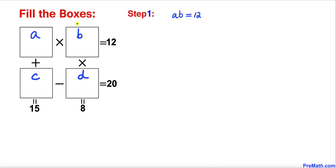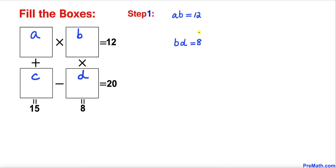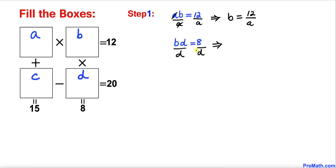Now let's focus on these boxes: B times D equals 8. Now we are going to manipulate these two equations. Dividing both sides of the first equation by A gives us B equals 12 divided by A. Dividing both sides of the second equation by D gives us B equals 8 divided by D.